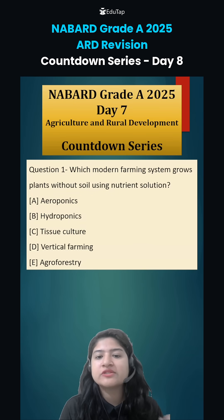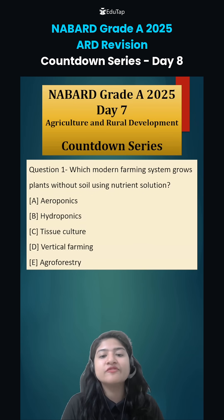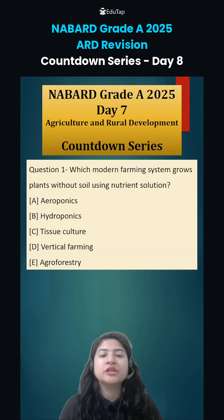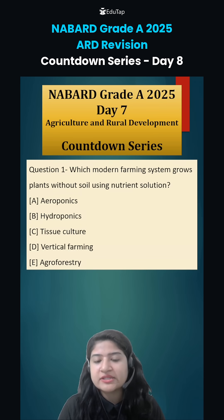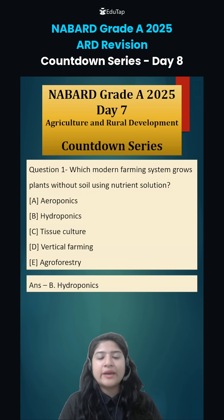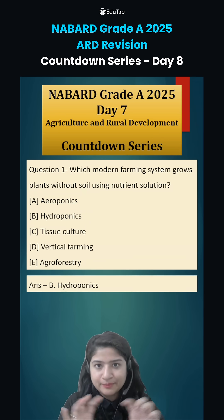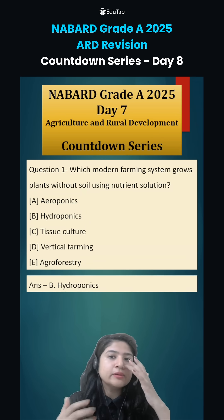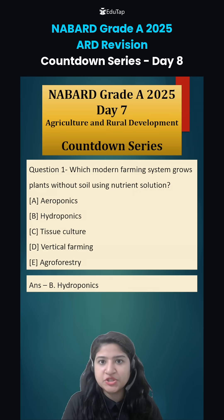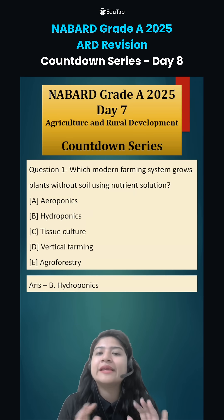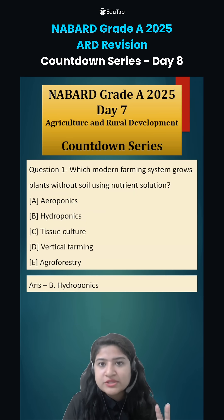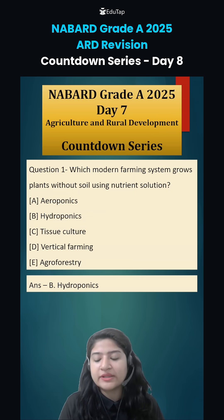Question number 1 for yesterday was: which modern farming system grows plants without soil using nutrient solution? In hydroponics, plants are directly implanted in a pipeline where water mixed with nutrients is discharged into it. So actual soil is not required — the nutrient solution is absorbed by the roots.